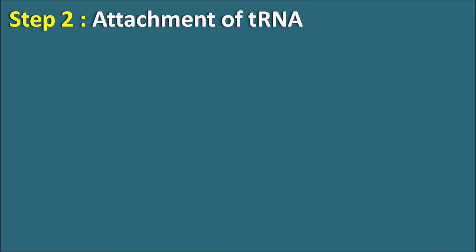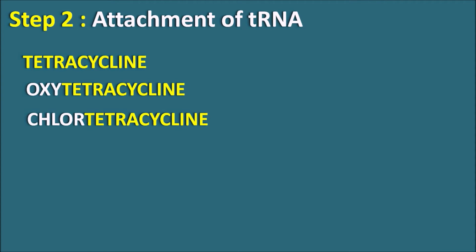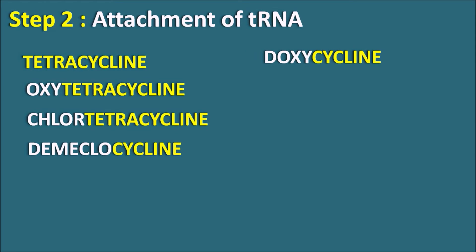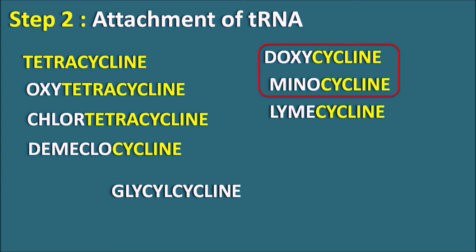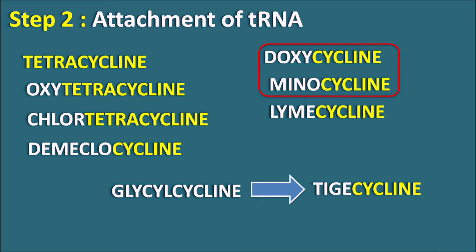The different types of drugs in the tetracycline category include tetracycline itself, oxytetracycline, chlortetracycline — all having the suffix 'tetracycline' — and demeclocycline, doxycycline, minocycline, and lymecycline, which have the suffix 'cycline'. Doxycycline and minocycline have greater oral bioavailability and can also cross the blood-brain barrier. A related category is the glycylcyclines, which includes tigecycline — acting similarly to the tetracyclines.